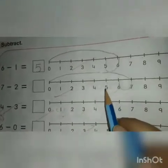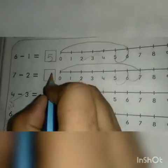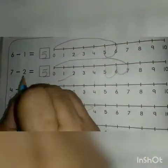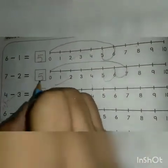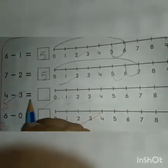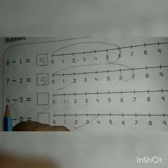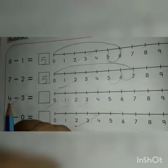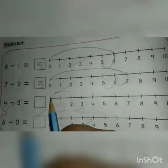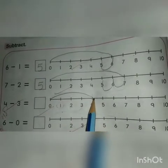Where will you stop? At number 5. Yes. Now we will write number 5. 7 minus 2 is equal to 5. And next line. Which number is this? This is number 4.